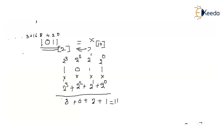This is how a binary number is translated to the decimal number system. But what if we have a binary point, such as 0.011? The digits after the binary point also have weights.